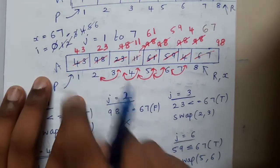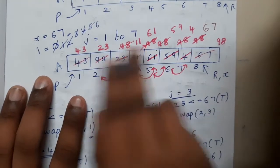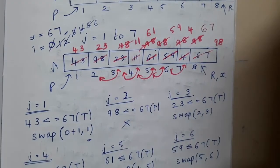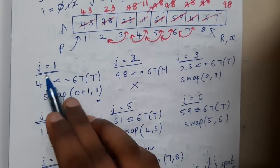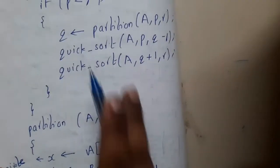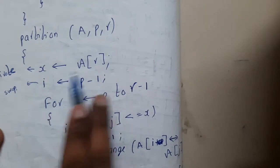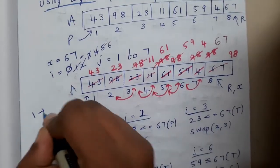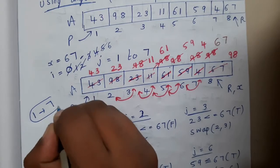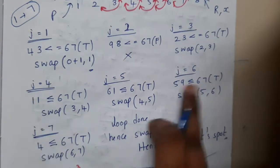We already discussed that we assume the last element as the pivot, so x equals 67 and i equals 0 initially. Since p minus 1 is 0 — p is 1, so p minus 1 is 0. Now we enter the partition function, substituting these values, and start the loop from j to r minus 1, which is 1 to 7. We need to perform this loop seven times.